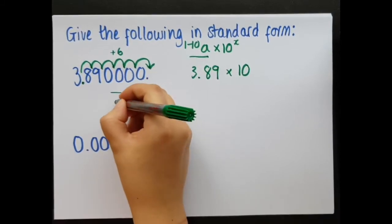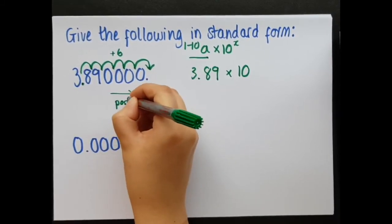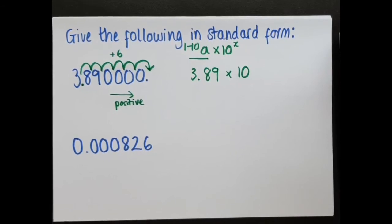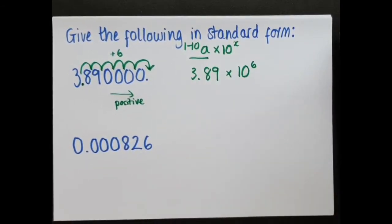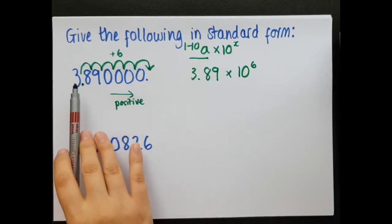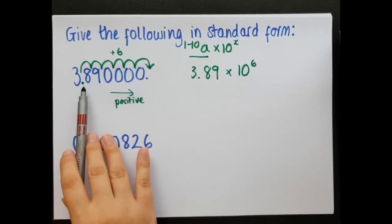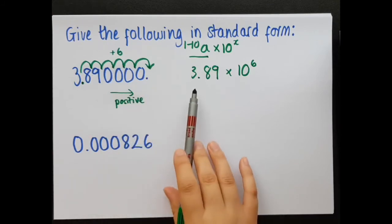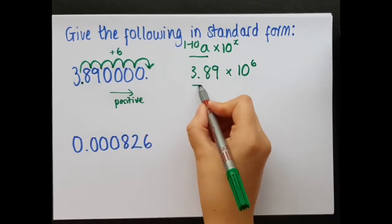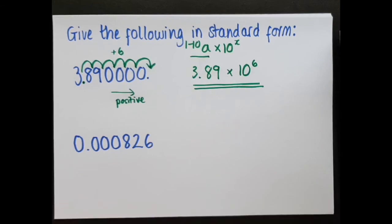So that is 6 places, and it's in the positive direction. That is positive towards the right, like I said, very much like a number line, which means that my index for 10 is 6. So, this number here, which is 3,890,000, becomes 3.89 times 10 to the 6, and that's that in standard form.